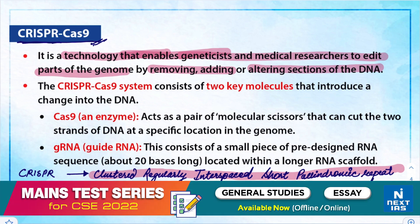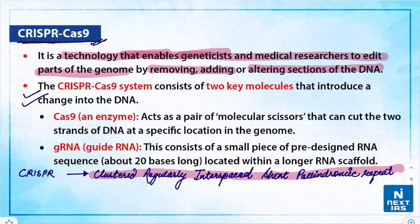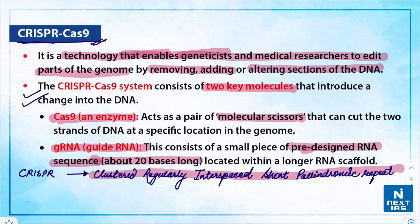CRISPR Cas9 was adopted from a naturally occurring genome editing system that bacteria use as an immune defense mechanism. The CRISPR Cas9 system consists of two key molecules: first, Cas9, a protein enzyme that acts as a pair of molecular scissors; and second, a guide RNA (gRNA), which consists of small pieces of pre-designed RNA sequence about 20 bases long.